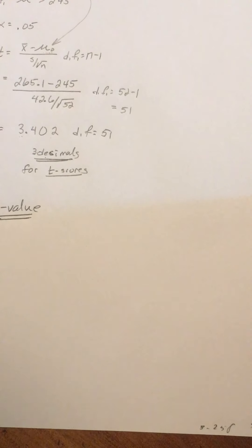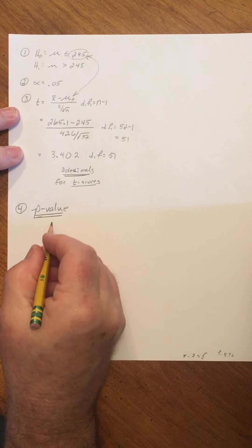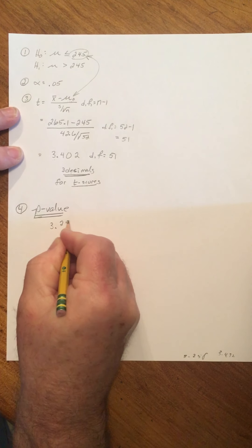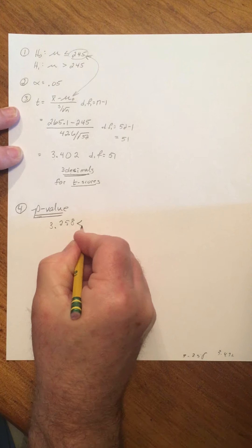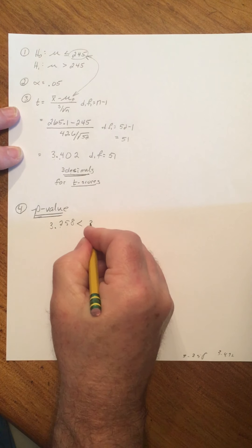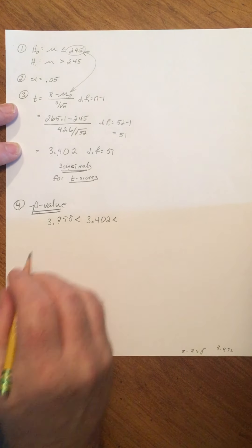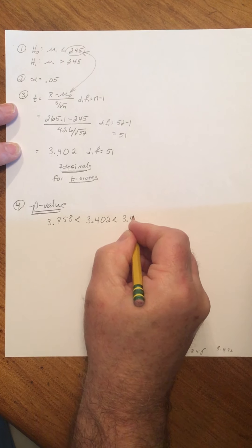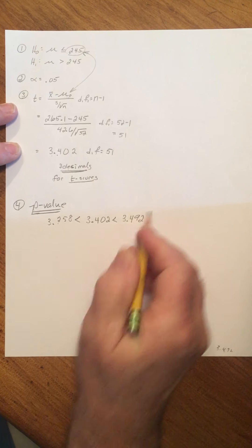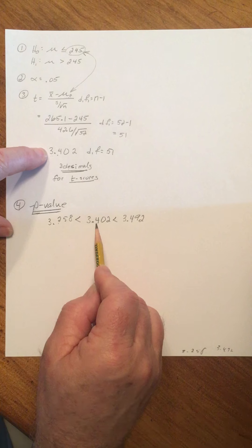So we had 3.258 is less than the number we require, 3.402, which is less than 3.492. Find the two numbers between which our value falls.